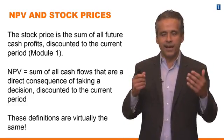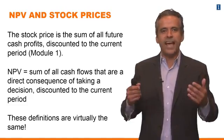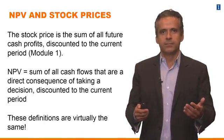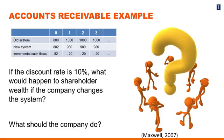Since NPV and stock prices are equivalent, consider the following question. We found that at a discount rate of 10%, the NPV is minus $118 million. Suppose the company decides to change the system — what is going to happen to shareholder wealth if the company does that, and what should the company do given this?